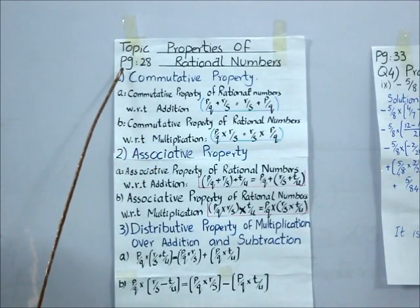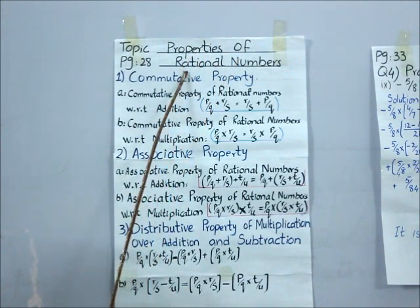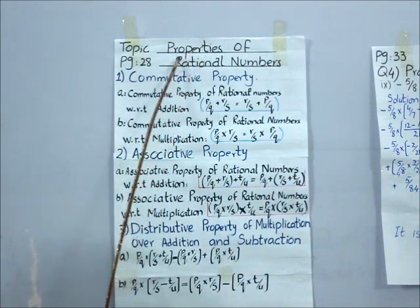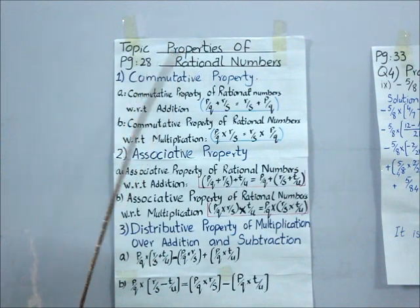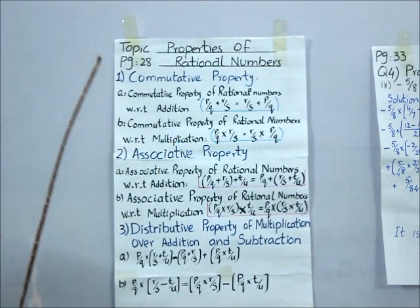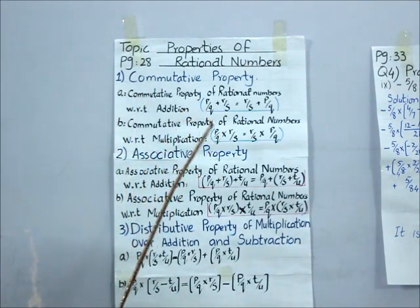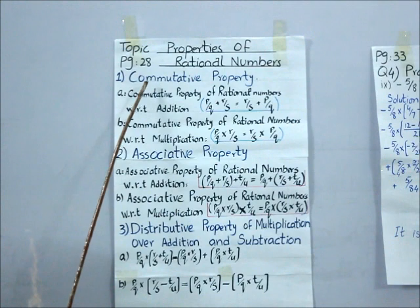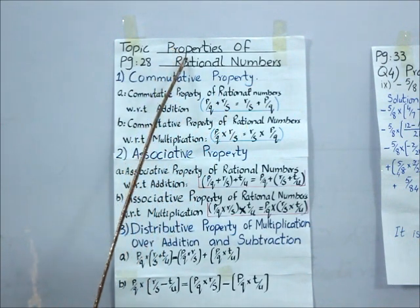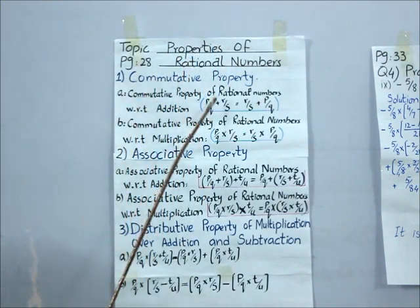Now students, open page number 28. There is another topic: properties of rational numbers. This is not a new concept for you — sometimes we use the word property, sometimes we use the word law. There are three main properties: commutative property, associative property, and distributive property. The purpose of these properties is that whenever we change the order of terms while adding or multiplying, the answer cannot be affected.